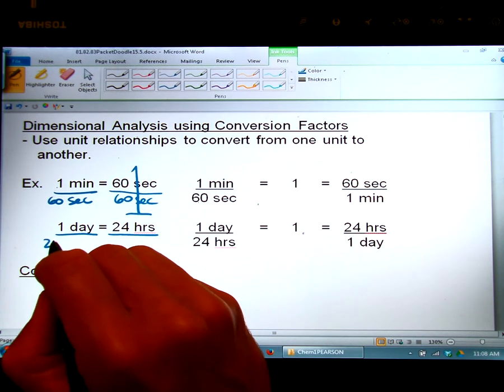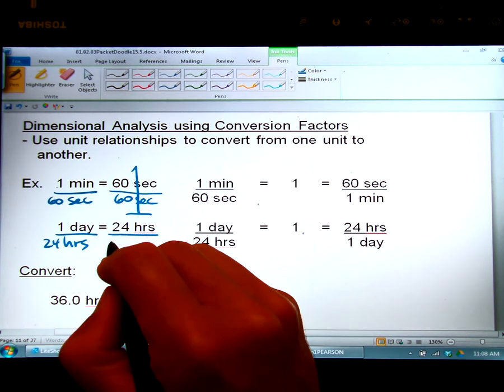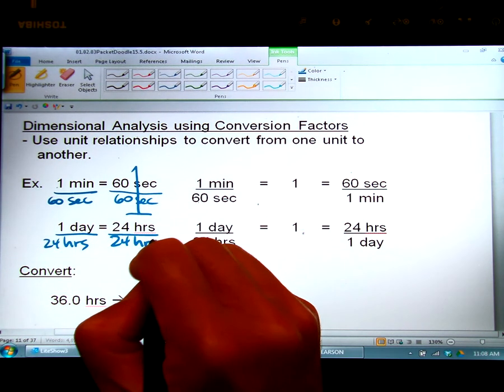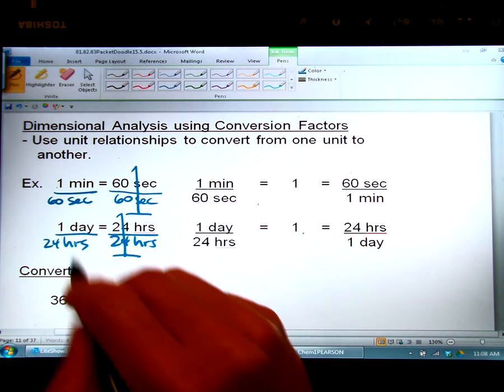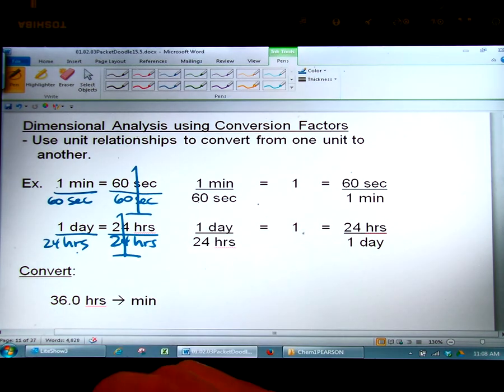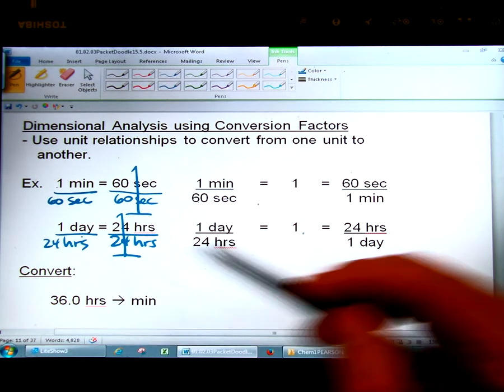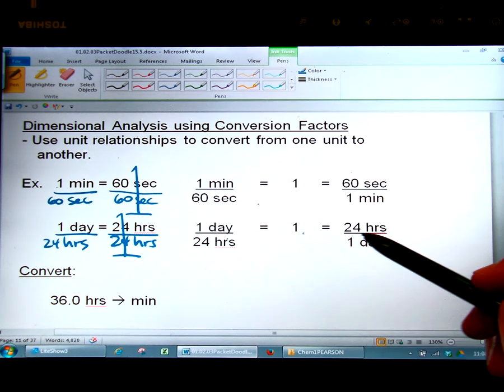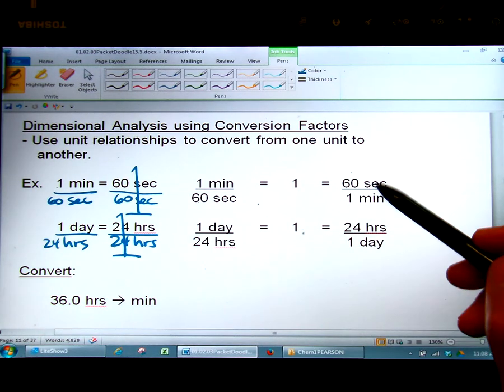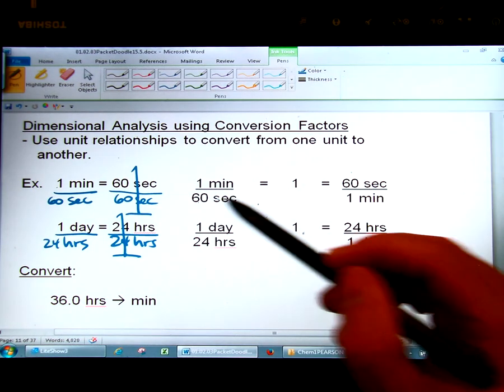You divide each side by one of them and then you'll see that one equals the other side. And you can inverse it mathematically without a problem because one over one is still one. So any inverse conversion factor is still equal to one.